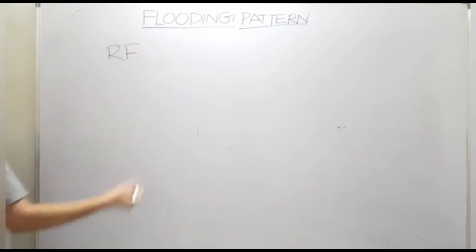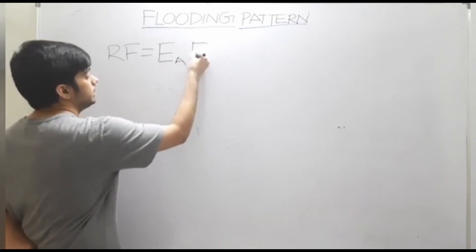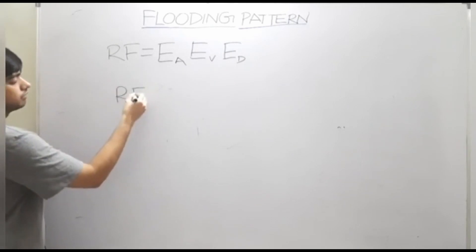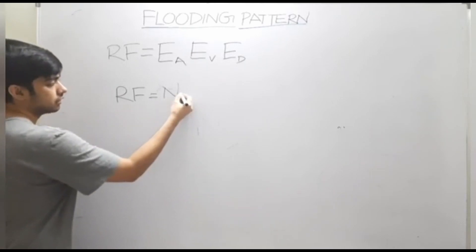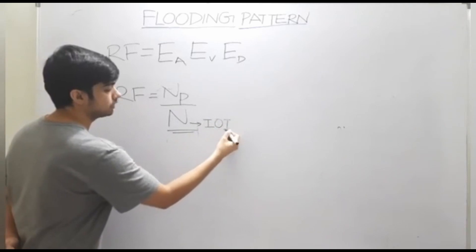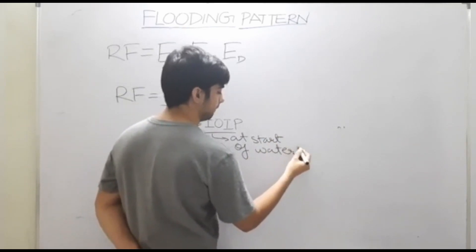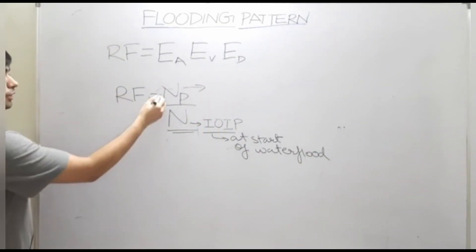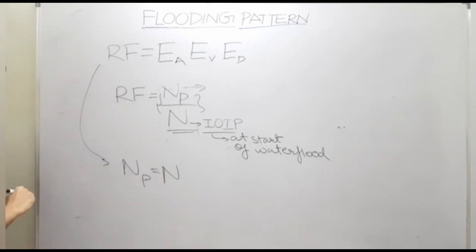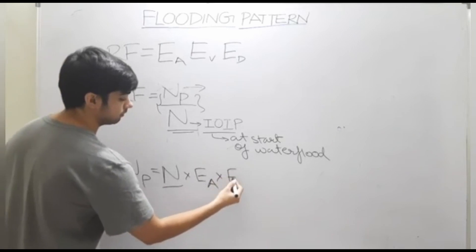Recovery factor is defined by aerial efficiency, aerial sweep efficiency, vertical sweep efficiency, and displacement efficiency. Recovery factor is basically the amount of oil produced divided by the initial oil in place at the start of water flooding. The ratio between produced oil and initial oil in place gives you the recovery factor. In other words, produced oil at any specific point in time equals the oil volume present at the start of water flood multiplied by all these efficiencies at that point in time.